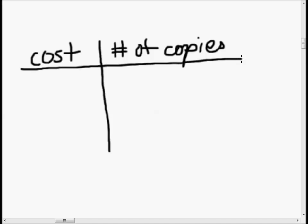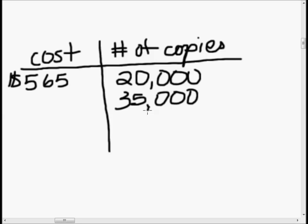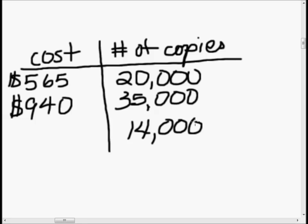Let's go ahead and fill out our chart. The cost for a month in which 20,000 copies were printed — that is a lot of copies — 20,000 copies was $565. And the cost for a month in which 35,000 copies, that's even more copies, was printed — that was $940. These people are spending a lot of money on copies. So what do we want to find out? We want to find out if we print 14,000 copies, how much would it cost?